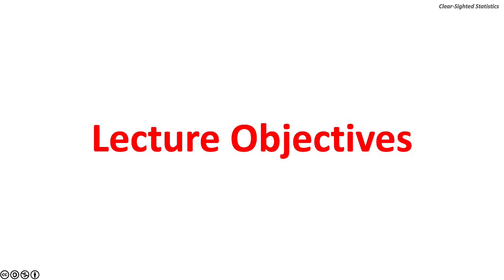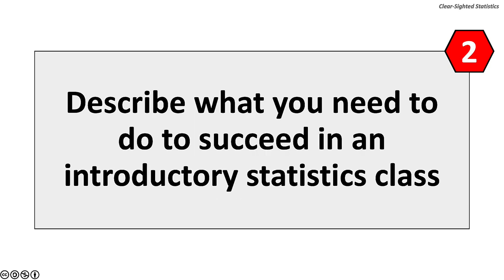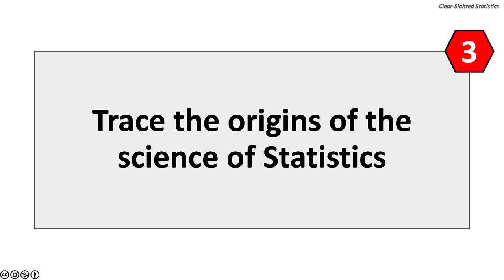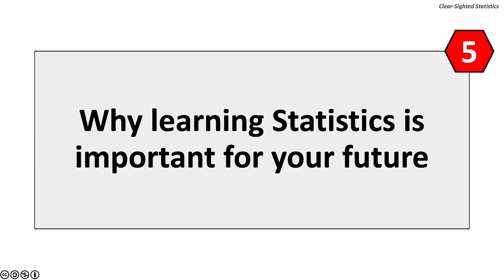This lecture has five objectives. First, to explain the discipline of statistics and some common misconceptions about it. Second, we will describe what you need to do to succeed in an introductory statistics class. Third, we will trace the origins of the science of statistics. Fourth, we will discuss why the study of statistics should lead to a healthy skepticism, distinguishing skepticism from cynicism. Lastly, we will review why learning statistics is important for your future.